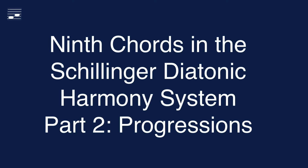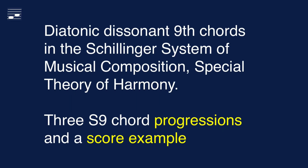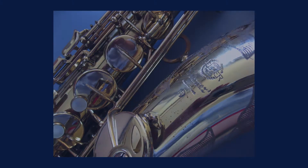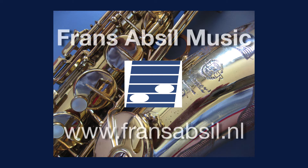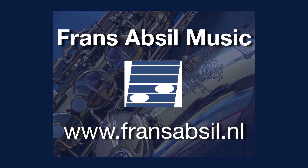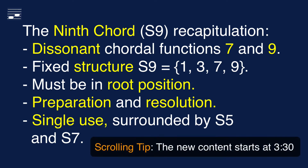Hello, this is part 2 of the series on the 9th chord in the Schillinger system of musical composition. This tutorial discusses progressions with the 9th chord in diatonic harmony. There also is a somewhat longer score example that I will discuss in detail. I start with a recapitulation of the main characteristics of the 9th chord as presented in part 1 of this series. You might want to skip this section and see the new content starting at around 3 minutes into the video.